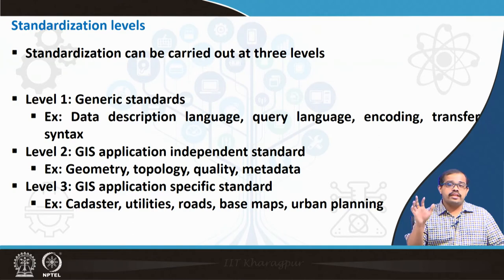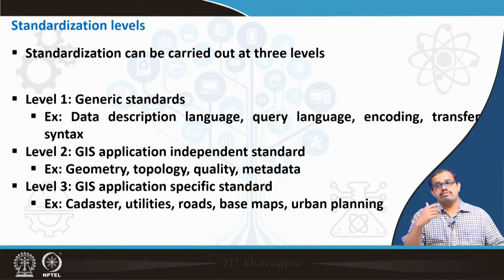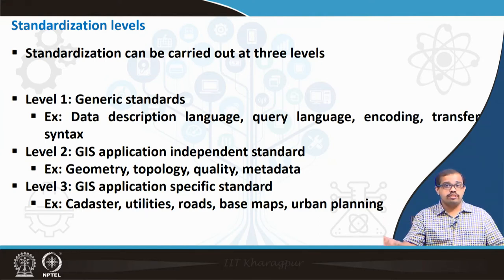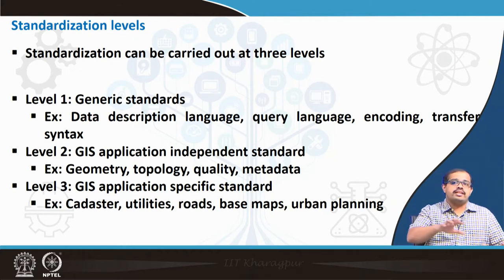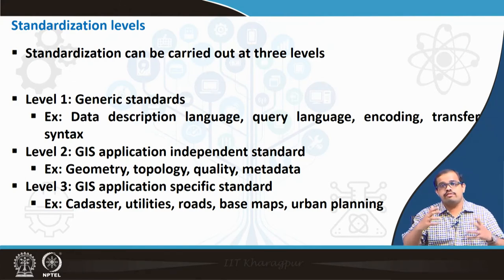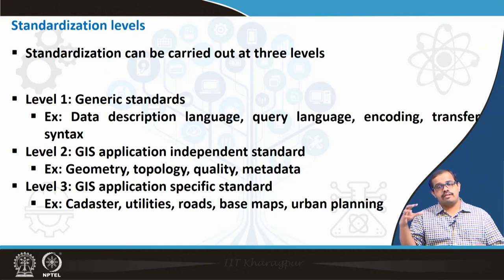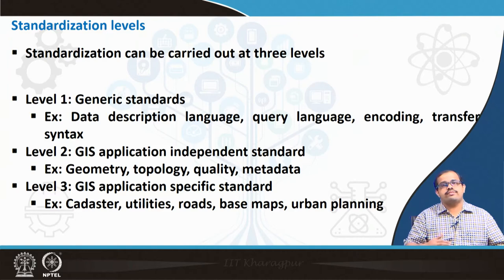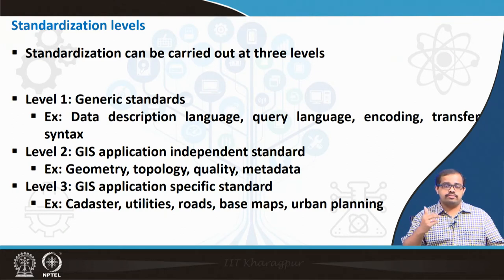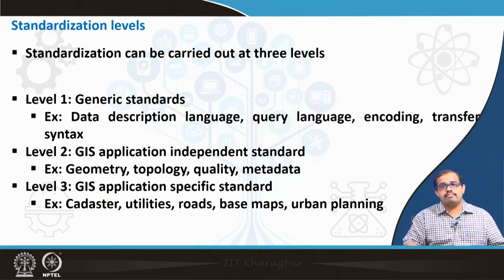Level 3 standardized data is very specific to what application we are using. For example, if we are using a cadastral application, or applications for utilities, roads, or urban planning — all these have their own standards. There are data which have to be looked at a scale of 1:10,000 or 1:5,000 to make effective decisions. Each application has its own way of looking at the data, so GIS application-specific standardization is necessary.